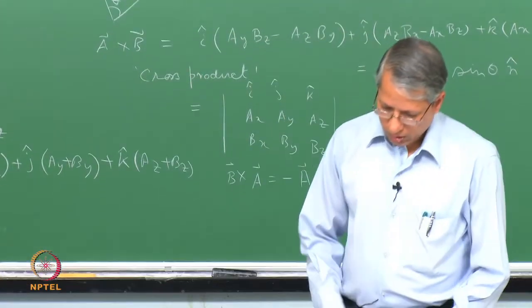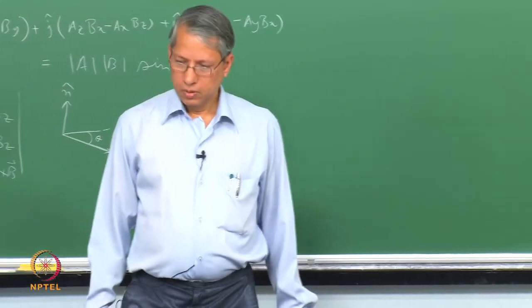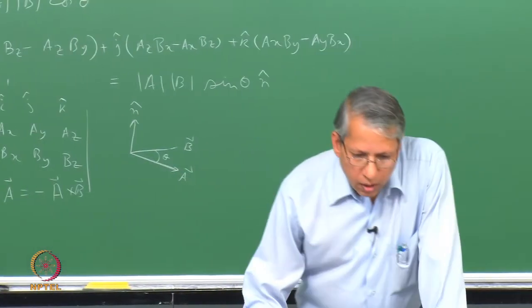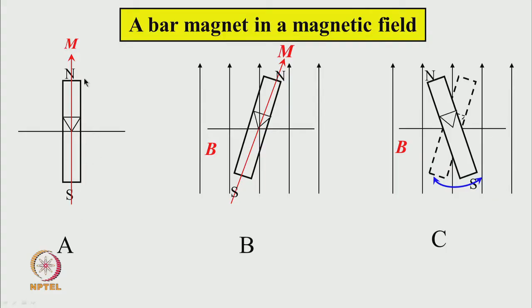With this background, let us now try to see what happens if we place a magnet in a magnetic field. Panel A shows a magnet — the magnetic moment is shown by the red line with letter m. This is the south pole and the north pole. The magnet is held at a pivot here, and the magnetic field is given by the black lines with letter B. The magnet is tilted at an angle.